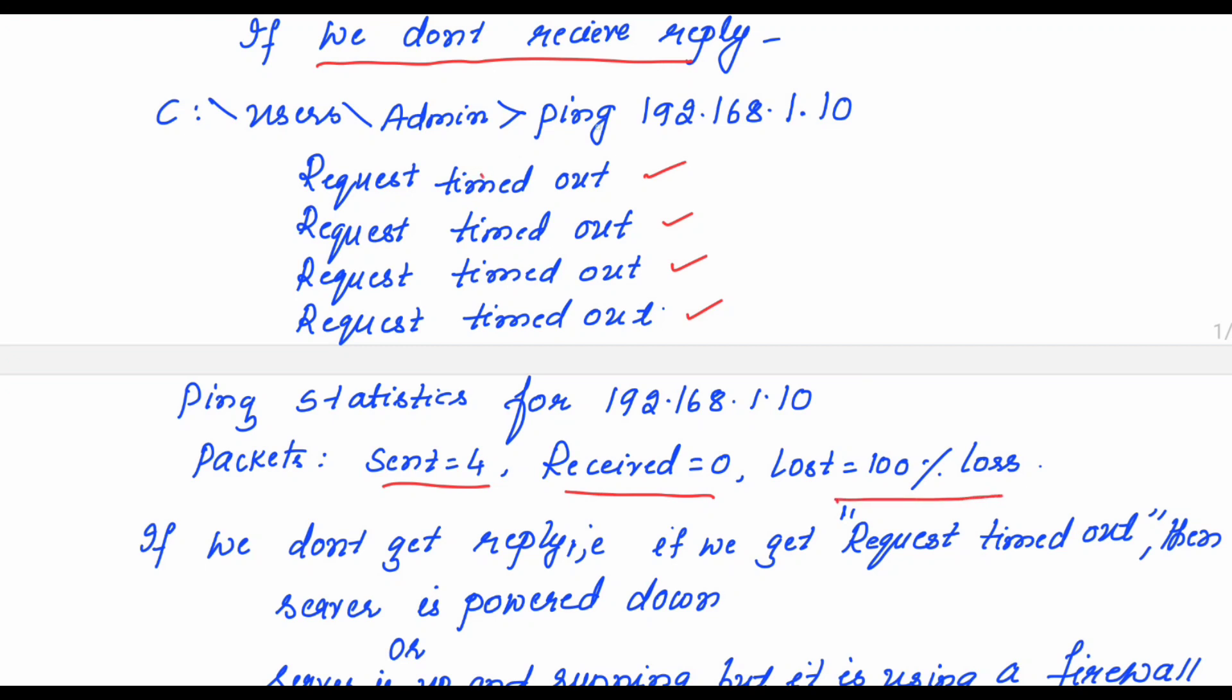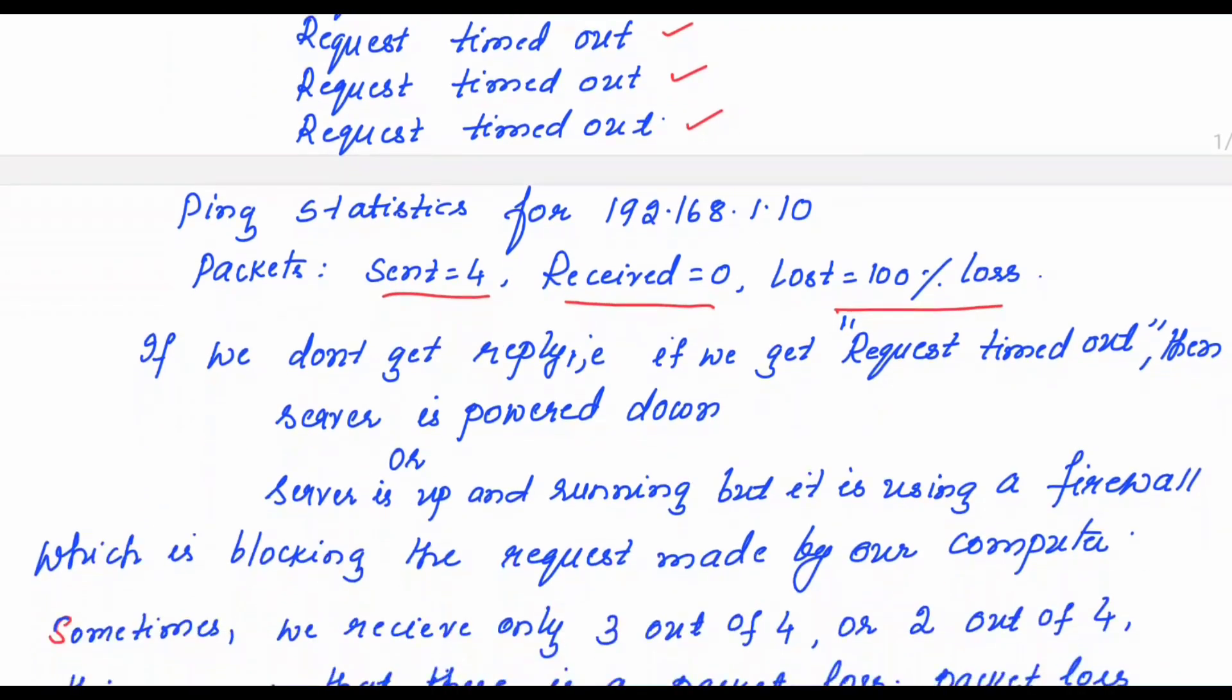That means the ping command which you type from your PC to the server has given a reply as request timed out. What does this particular sentence request timed out mean? If we do not get reply and if we get request timed out, then it means two things. One is the server is powered down, or the server is up and running but it is using a firewall which is blocking the request made by our computer. You need to check the firewall settings in your PC. If you have tried blocking from this particular IP address, then you are not able to receive the output from the server 192.168.1.10.